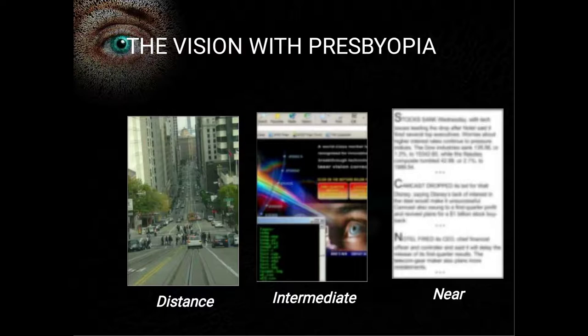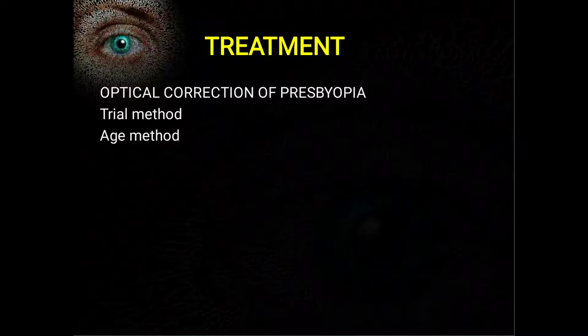Distance vision is alright. Intermediate vision — that is the vision between 33 centimeters and 6 meters — is slightly affected initially. This intermediate vision is responsible for computer use, reading a desktop, or for a shopkeeper grabbing something from a shelf. As the person grows older, near vision is of course also affected.